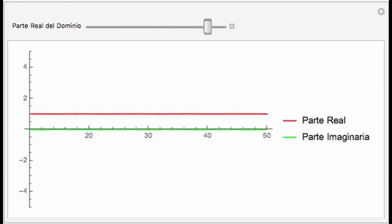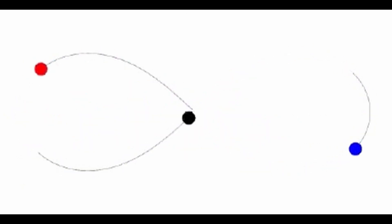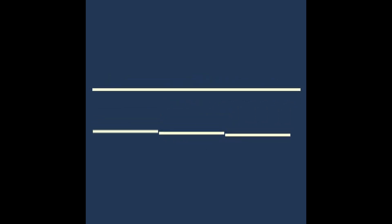Almost all points on an algebraic variety are non-singular, forming an open and dense set in the variety. This holds true for both the Zariski topology and the usual topology for varieties defined over the complex numbers. Singular points provide intriguing insights into the local behavior of algebraic varieties.